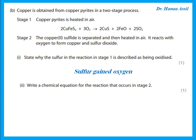Write a chemical equation for the reaction that occurs in stage 2. In stage 2, copper sulfide (CuS, since copper is valency 2 and sulfur is valency 2) is heated in air and reacts with oxygen to form copper plus sulfur dioxide SO₂. Checking the equation, the number of atoms before and after the arrow for each element is the same, so this is already balanced.